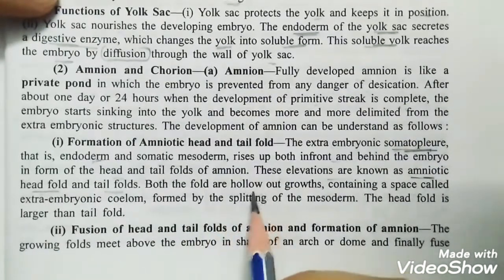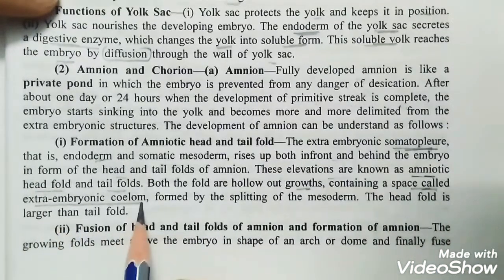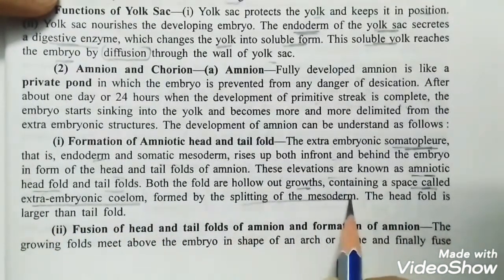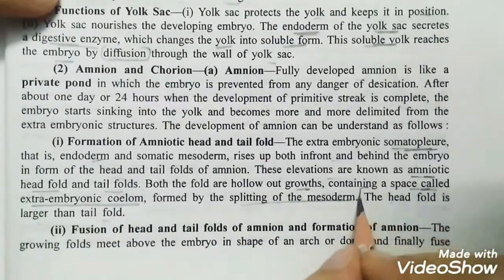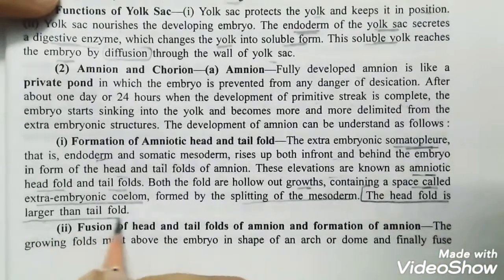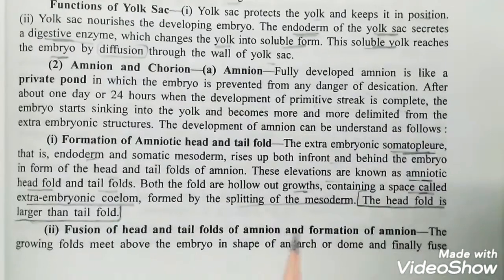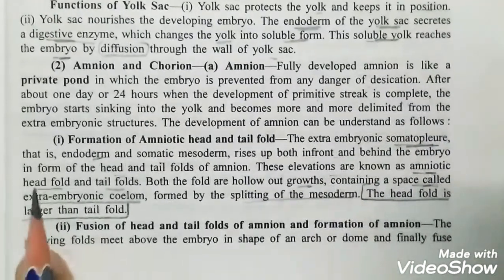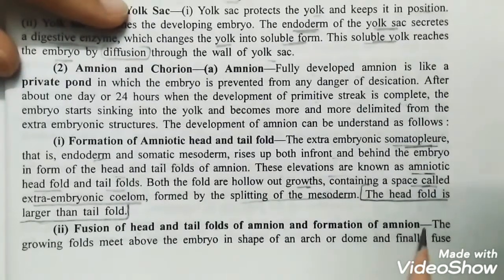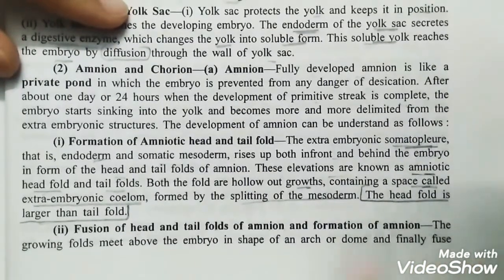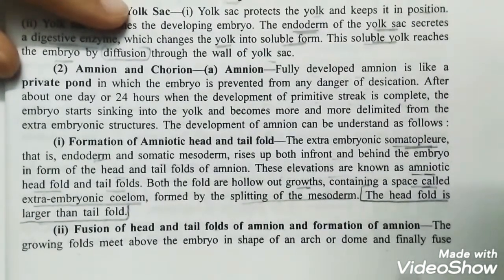These two folds are called hollow outgrowths, formed by splitting of the mesoderm — the extra-embryonic coelom. The head fold remains larger than the tail fold. Then the fusion of head and tail folds of amnion occurs. The growing folds meet above the embryo in the shape of an arc or dome and finally fuse.